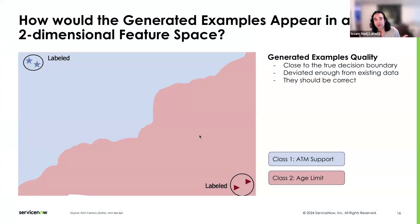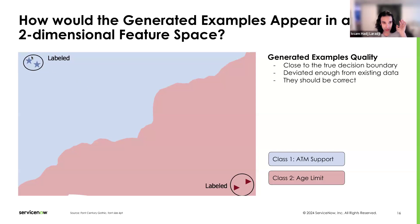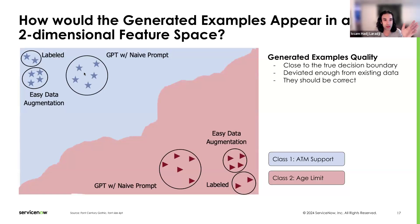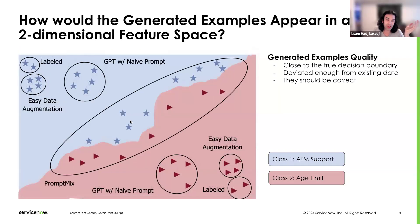How do these generated examples appear in a 2D feature space? Let's say we have two classes: the blue region is ATM support and the red region is age limit, with only two examples per class. The true decision boundary is a non-linear curve. With only two examples per class, it's very difficult for the model to learn this boundary. With Easy Data Augmentation or GPT, examples are very close to existing labels and still don't allow a clean decision boundary. With PromptMix, we get examples close to the decision boundary, enabling that subtle, precise boundary that helps the model generalize effectively.